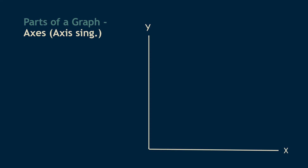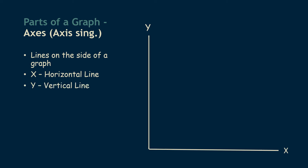Now I want to move on to the different parts of a graph. You're going to have to recognize what they stand for when you look at a graph in order to interpret them. First, we're going to talk about the axes — one single axis, which is why I have that in parentheses. The x-axis is the horizontal, side-to-side line at the bottom of the graph, and the y-axis is the vertical, up-and-down line on the left-hand side. These are found on all line graphs and all bar graphs.